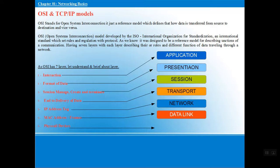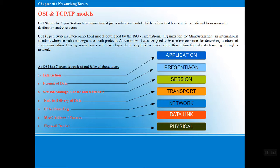Next is the Data Link layer, which works similarly to the Network layer but deals with MAC addresses instead of IP addresses. Since MAC addresses are unique to each device, the Data Link layer uses MAC addresses to send data exactly to the correct destination. It tags both the source MAC address and the destination MAC address.